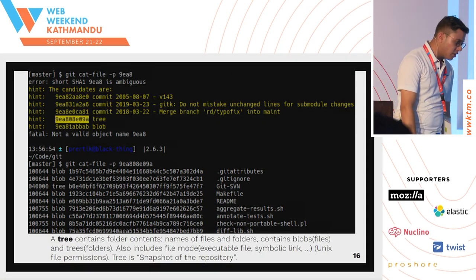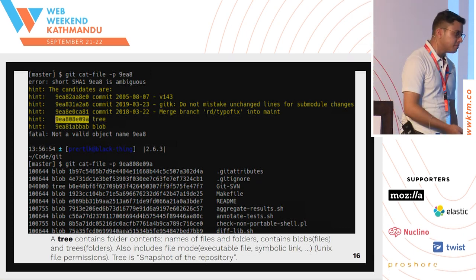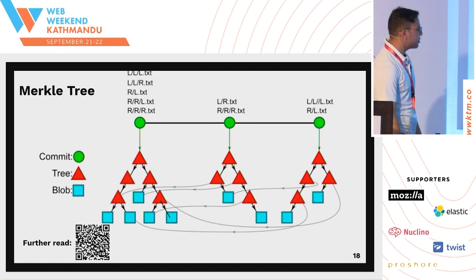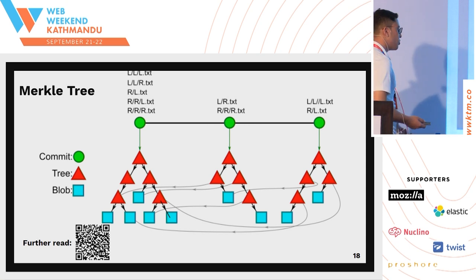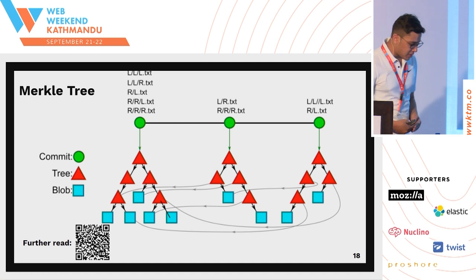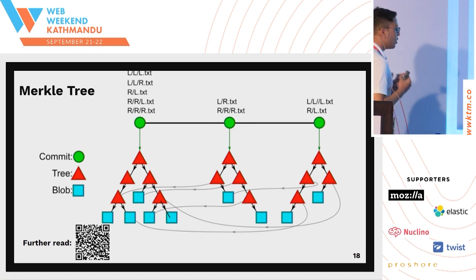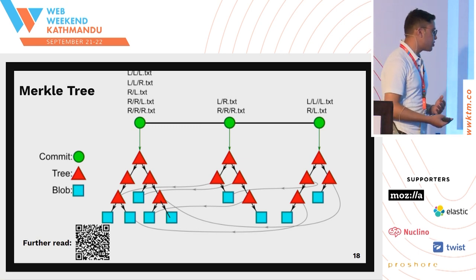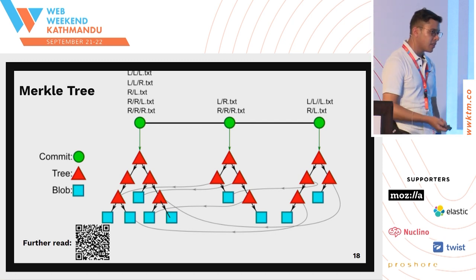A tree contains folder contents — it gives you the read mode and all Unix file permissions. A tree is basically the snapshot of the repository. Git follows Merkle tree representations, because it is the effective way to handle SHA-1-based hashing. In a Merkle tree, you don't need to know every hash key of every tree or blob. You just need to know the hash key of the commit, and from that you can derive the whole current working structure. For further reading, you can scan the QR code — there's also some content about bloom filters.